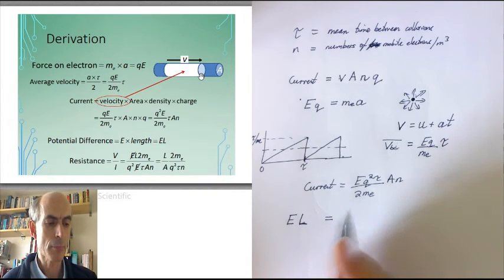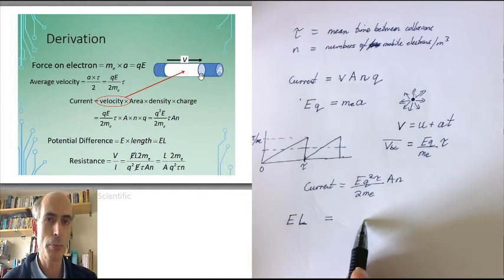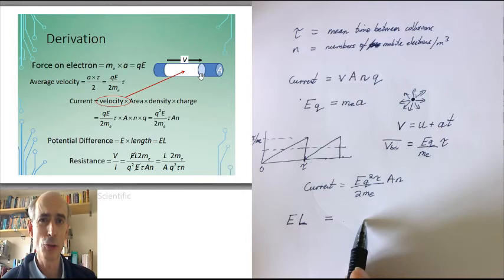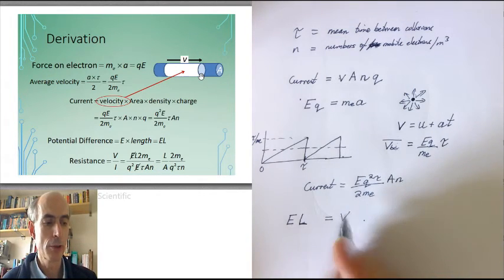So that's the amount of work or energy that it takes to move a unit charge over that distance l from one side of the conductor to the other. However, the energy required to move a unit charge between two points is, by definition, the potential difference between them. So that's also going to be equal to the voltage across my conductor.